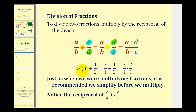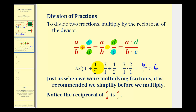For another example, if we have three divided by one-half, we write three over one divided by one-half. Then instead of dividing by one-half, we multiply by the reciprocal, which is two over one. Three times two is equal to six, and one times one is equal to one. So we have six, which means there are six one-halves in three.